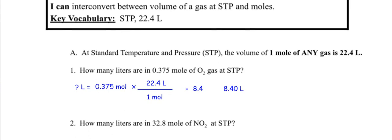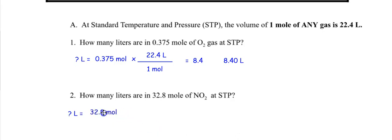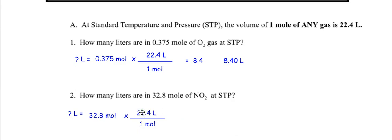How many liters are in 32.8 moles of nitrogen dioxide? Pause and figure it out yourself using the previous problem as a reference. Question mark liters equals 32.8 moles — moles on the bottom, 22.4 liters on top, multiply. I don't need five digits; I need three, so round to 735 liters.